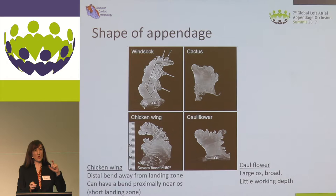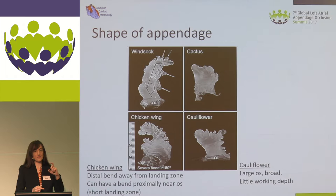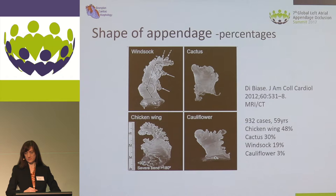When we see other different types of morphologies, the cauliflower type has a very large os — it's very broad — but you've got little working depth. So within the morphologies themselves we've got very many lobes. The most common type will have two lobes to the appendage itself. It's that very broad appendage os with very little landing zone.